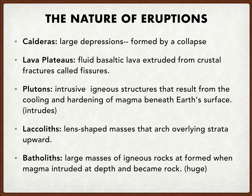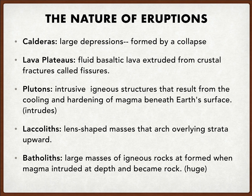The nature of these eruptions leaves us with very large landforms that cover the landscapes and topography we identify. Calderas are large depressions. We've got lava plateaus where basaltic material will extrude from the crust through what we call fissure eruptions — which happen when two pieces of continental crust diverge and tear apart, creating a huge wall of magma that turns into lava shooting into the air. We can have plutons, which are intrusive igneous structures that result from the cooling and hardening of magma deep below. We have laccoliths, which are lens-shaped masses that arch overlying strata upward. And lastly, batholiths, which are very large masses of igneous rock formed when magma intruded at depth and became rock — such as the massive plutons in the Sierra Nevada.